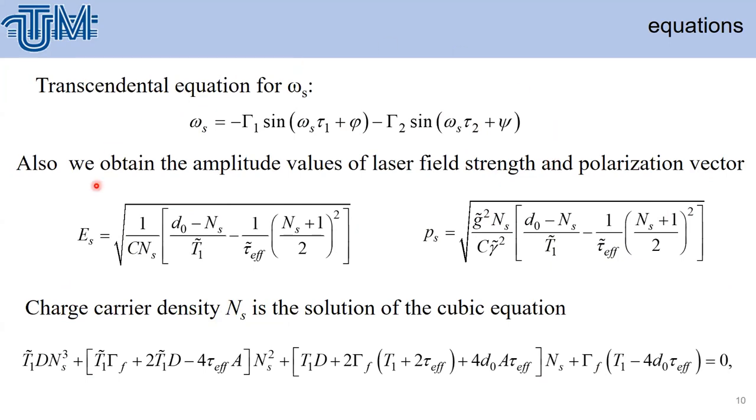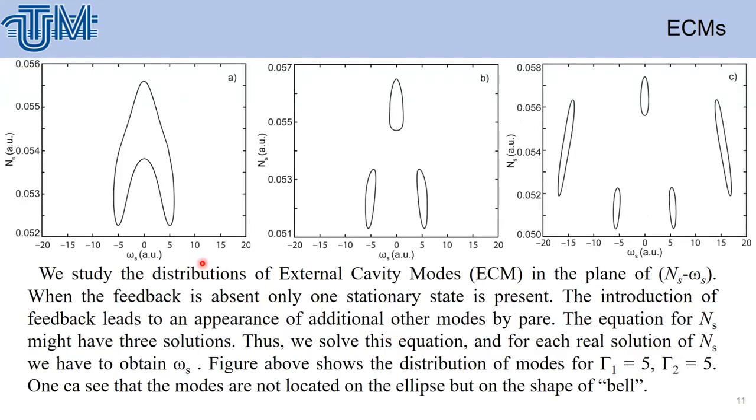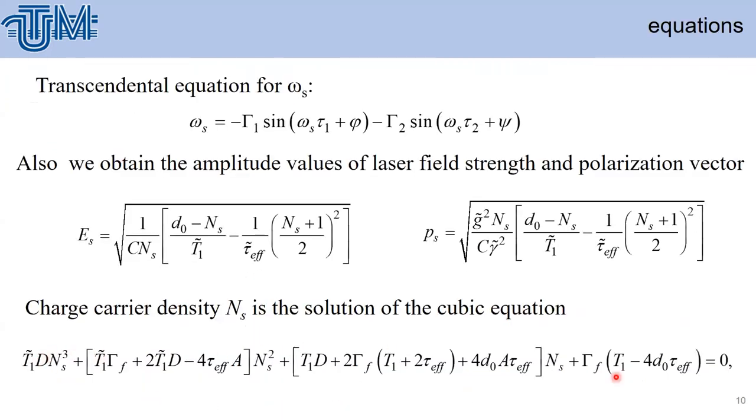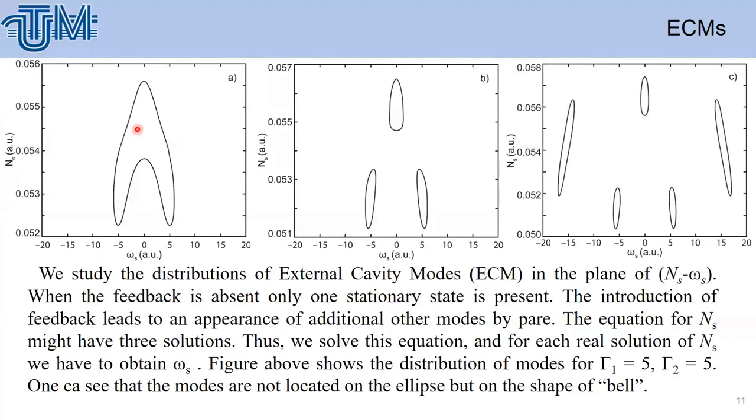In this case, the system can be solved with some numerics, and we studied the distribution of modes. Usually, the distribution of modes was on the ellipse, but due to the presence of cubic equation, we got some another distribution here, and we observe that in this case, the distribution of modes is not anymore elliptic, but some kind of another one.